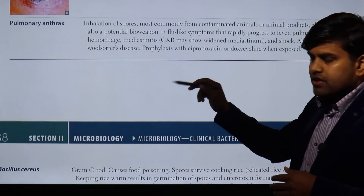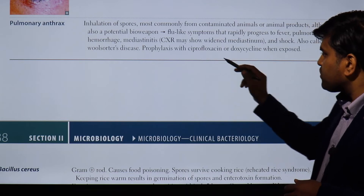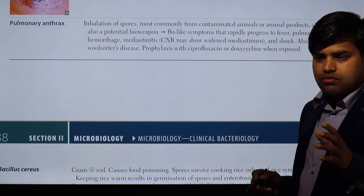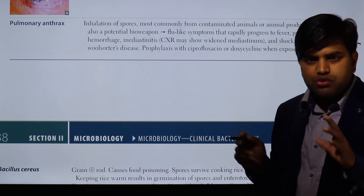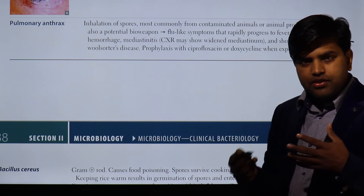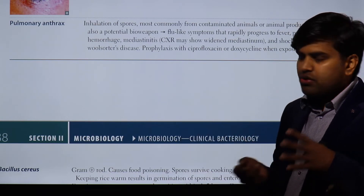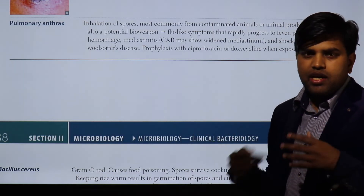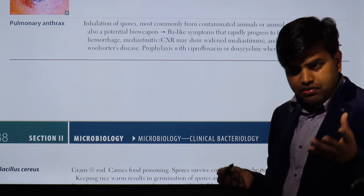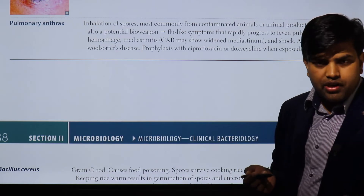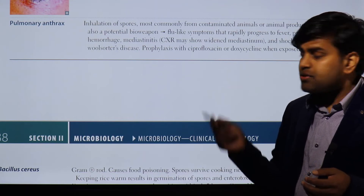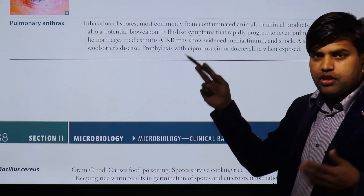Pulmonary anthrax is also called woolsorter's disease. Prophylaxis with ciprofloxacin or doxycycline is indicated when there has been exposure to spores. If a high-profile person suspects exposure after opening a suspicious letter and presents with flu-like symptoms, they should be admitted and started on ciprofloxacin or doxycycline immediately, with close monitoring.